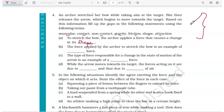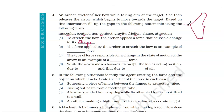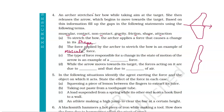The bow's original shape changes when we apply a force and stretch it. Part B: the force applied by the archer to stretch the bow is an example of muscular force. Part C: the type of force responsible for the change in the state of motion of the arrow is an example of contact force.